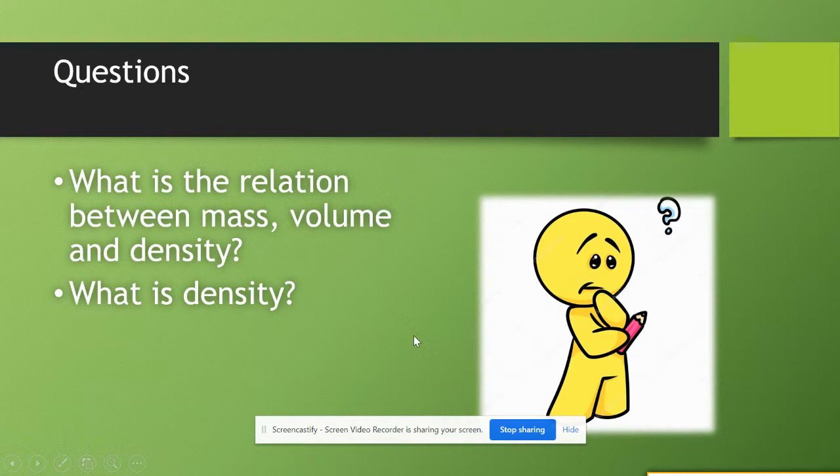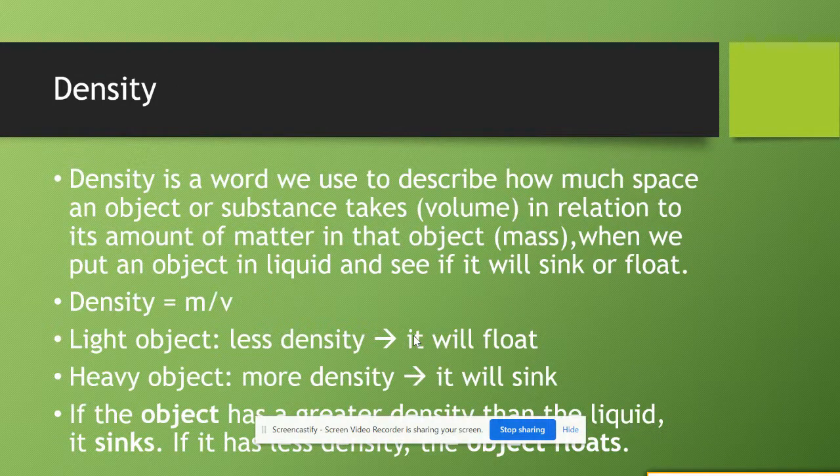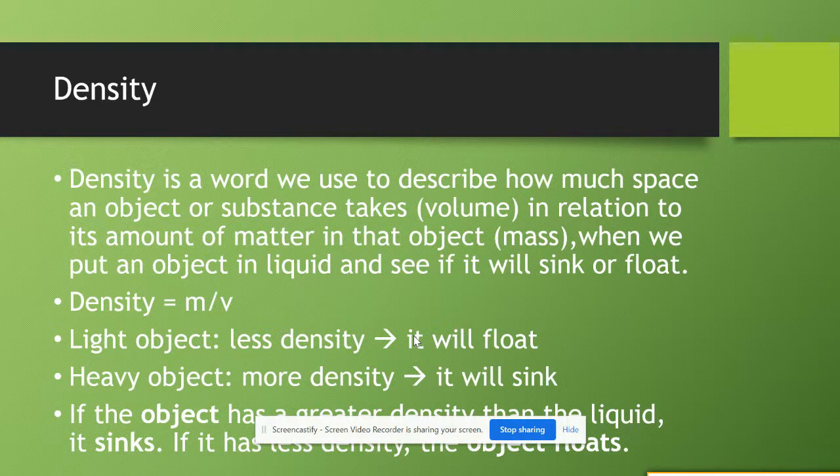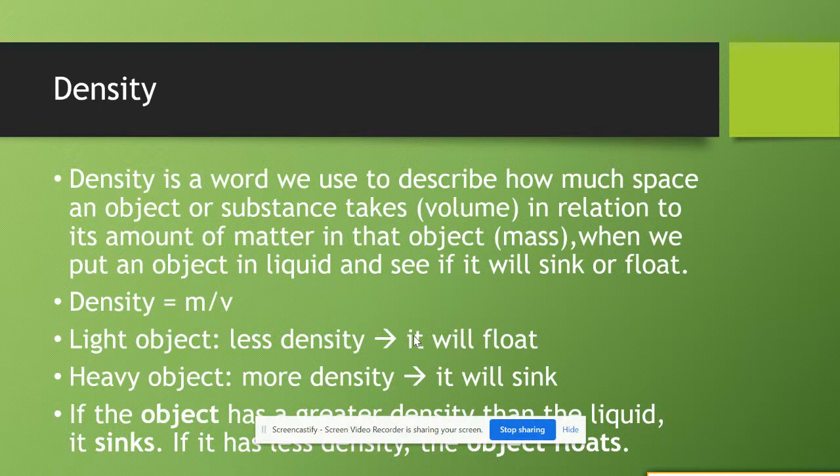Now what is the relation between mass, volume and density? So what is density? Density is a word we use to describe how much space an object or substance takes, a volume, in relation to its amount of matter in that object, its mass. When we put an object in a liquid and see if it will sink or float we can understand the density of each object.